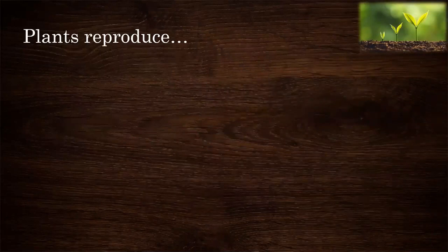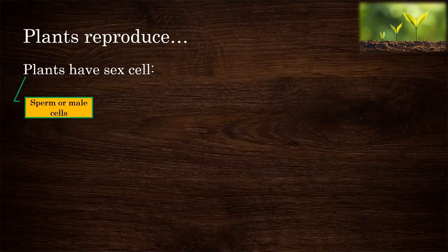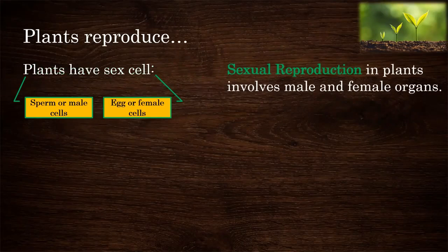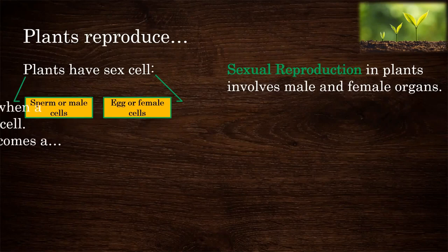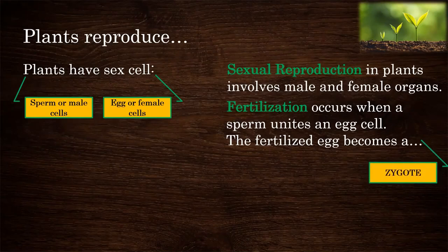Plants reproduce in different ways depending on their structures and the surroundings they live in. Plants have sex cells — sperm or male cells, and egg or female cells. Sexual reproduction in plants involves male and female organs. Fertilization occurs when sperm unites with an egg cell, and the fertilized egg becomes a zygote.